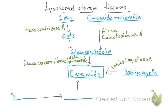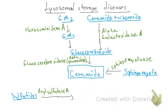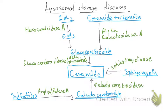Another component is sphingomyelin, which requires the enzyme sphingomyelinase to convert to ceramide. On the lower left of the pathway, we have sulfatides, which need the enzyme arylsulfatase A to continue. The product is galactocerebroside, and then galactocerebrosidase converts galactocerebroside to ceramide. So: sulfatides → galactocerebroside using arylsulfatase A; galactocerebroside → ceramide using galactocerebrosidase.